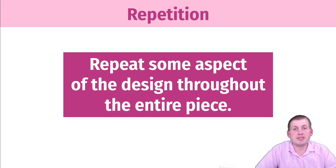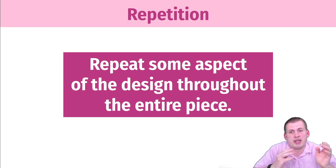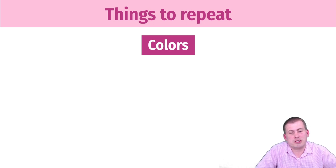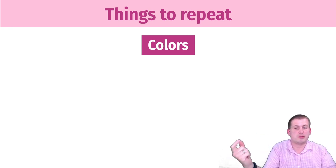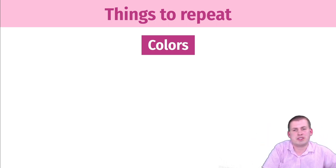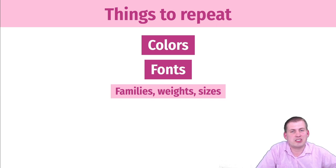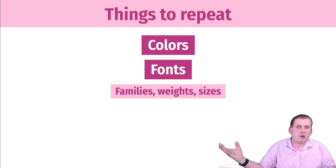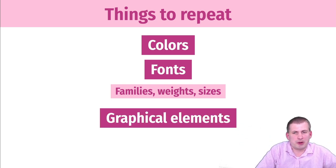Repetition is the next letter in our CRAP acronym. Repetition just means you repeat things in your design throughout the design. You can repeat colors — going back to that Atlanta sunset example, use those three colors consistently, with all headings one specific color and subheadings another. You can also repeat fonts — you're not going to want to change fonts every time you get to a new chapter. Just choose one or two and repeat those throughout.